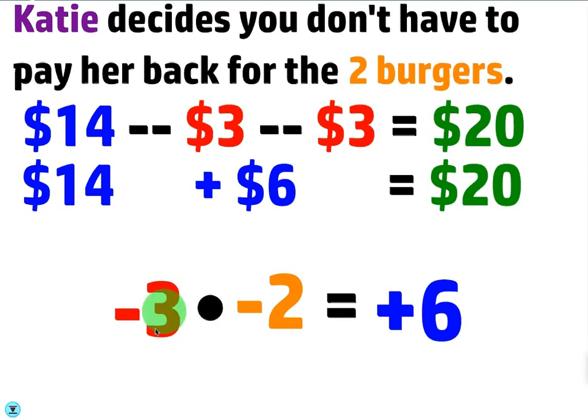Another way of writing this is negative 3 times negative 2. In other words, you're taking the debt away twice, the debt of $3 you're taking it away twice. So you're multiplying negative 3 times negative 2 is a positive 6.